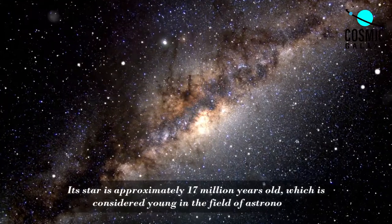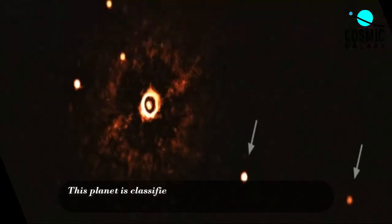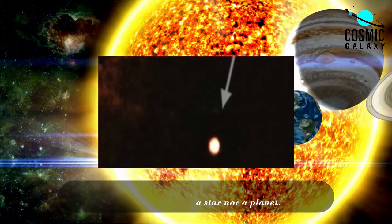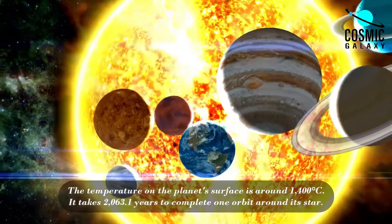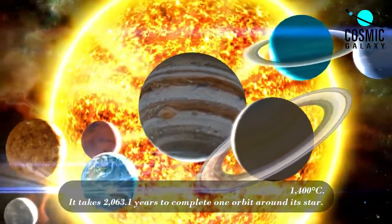Its star is approximately 70 million years old, which is considered young in the field of astronomy. This planet is classified as a brown dwarf by NASA, which means it is neither a star nor a planet. The temperature on the planet's surface is around 1,400 degrees Celsius. It takes 2,063.1 years to complete one orbit around its star.